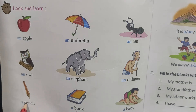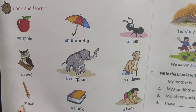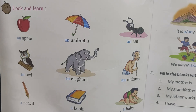Pencil — now P kya hai? Vowel hai? Consonant. Very good. P kya hai? Consonant. So P ke aage kya aega? A. Book — B kya hai? Consonant. A. Baby — A.